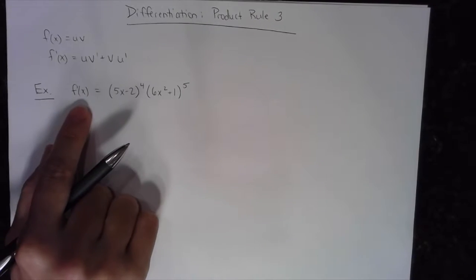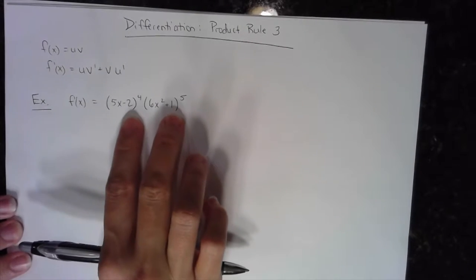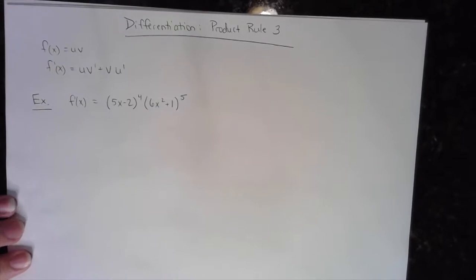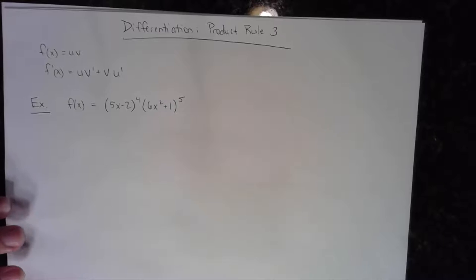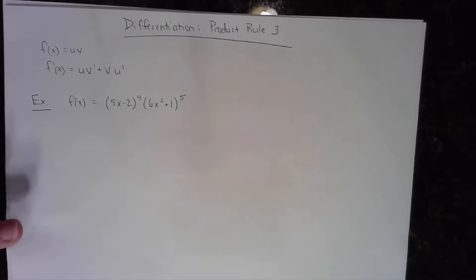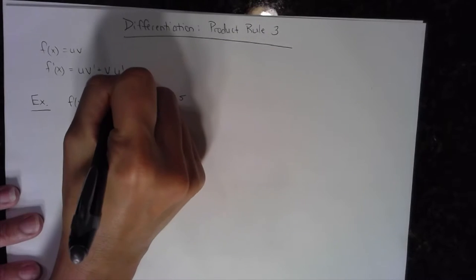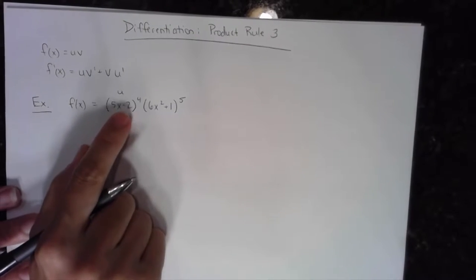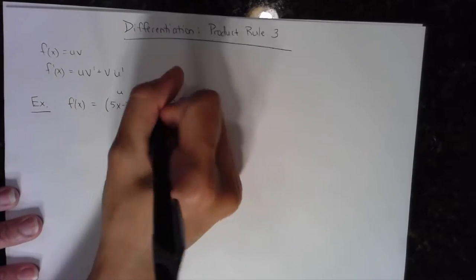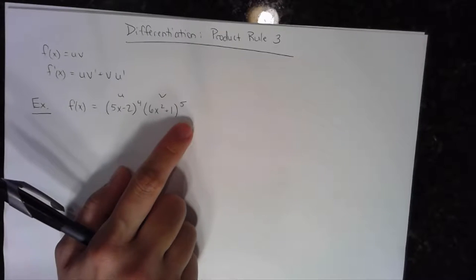So now my function has two expressions, and they're both chain rules if I were to derive them. What's the product rule? Well, the first times the derivative of the second, plus the second times the derivative of the first. In this case, my u is this whole (5x − 2)⁴, and v is (6x² + 1)⁵.